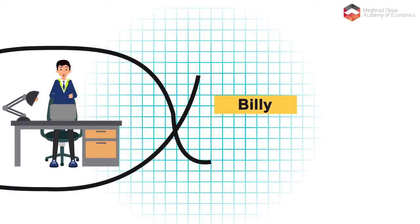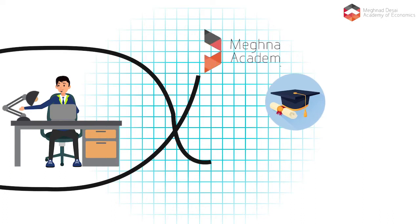Billy, a commerce graduate like Bob, had enrolled in the Begnath Desa Academy of Economics for his postgraduate in economics.